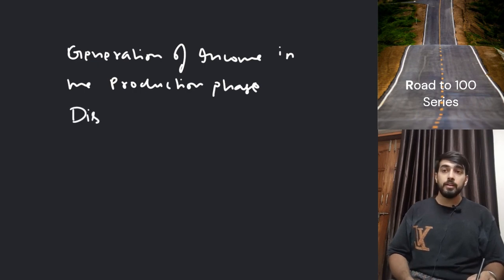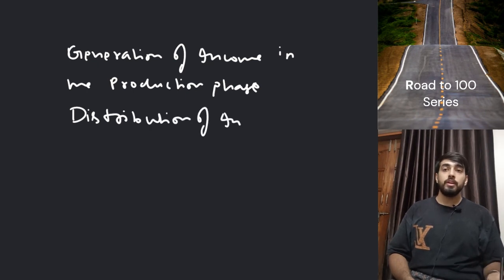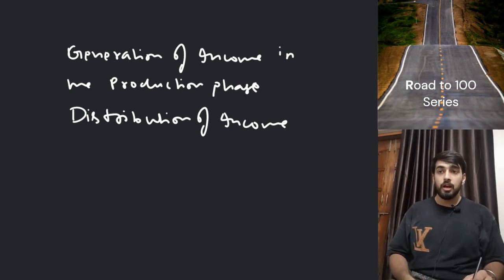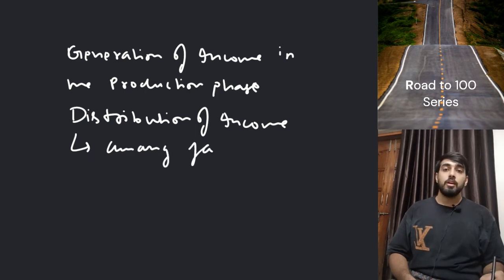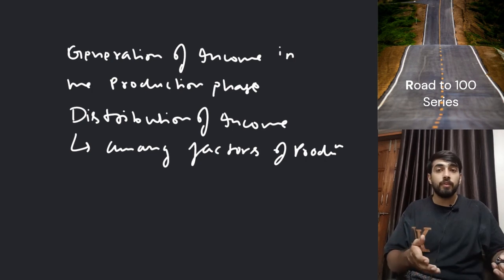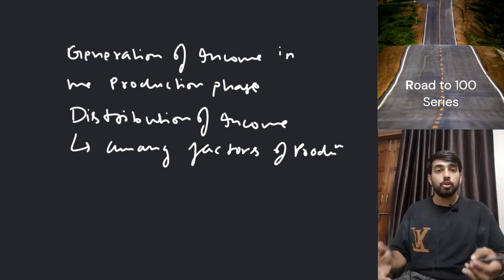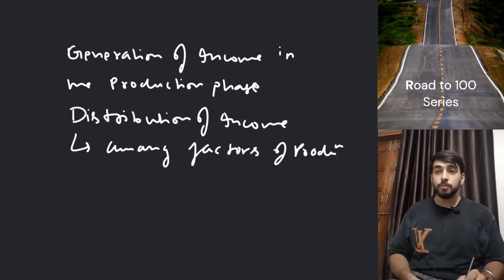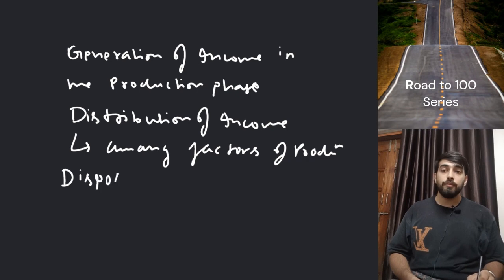Then comes distribution of income — distribution of income basically among the factors of production. Because we have factors of production who provide factor services, we need income distribution. And last, we have the disposition phase.